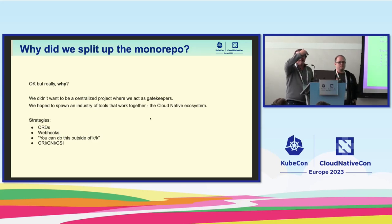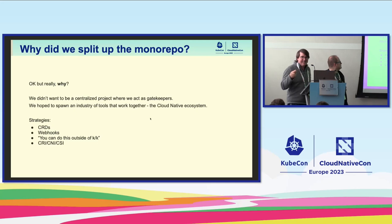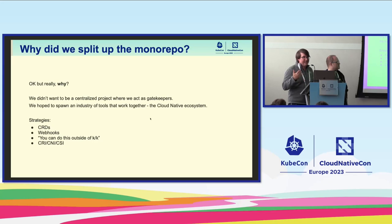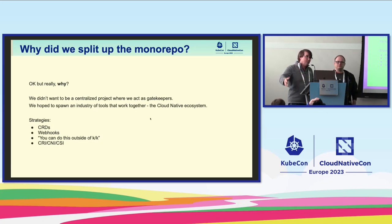We had a bunch of technical strategies to enable this idea. The core idea was to make sure that you did not have to contribute to Kubernetes core to get anything done. Things like CRDs enable you to add types without extending the API server. Webhooks enable you to change the behavior of any type. We added APIs where there were no extension points before, for things like CRI, CNI, and CSI.